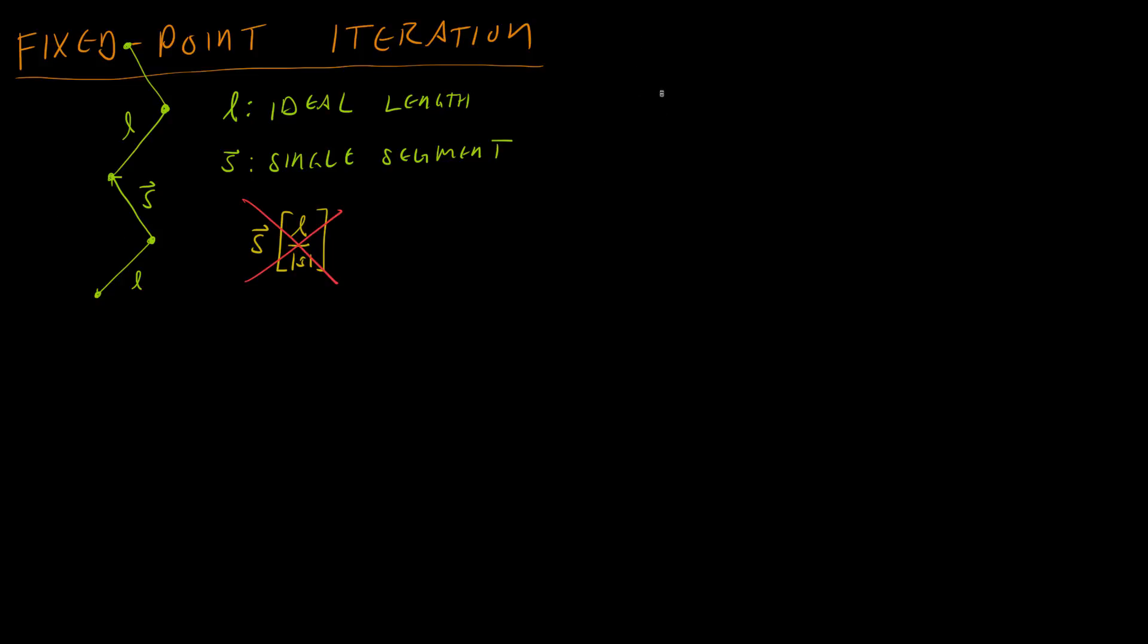We're going to make a new function called G of s, and I'm going to set it to be a special thing. Let me just write this and then I'll explain what it means: 2L squared over length of s squared plus L squared.